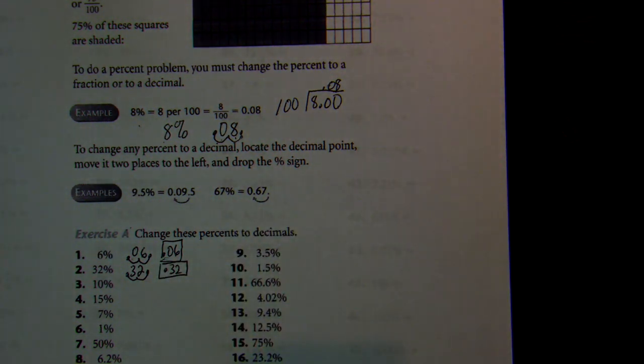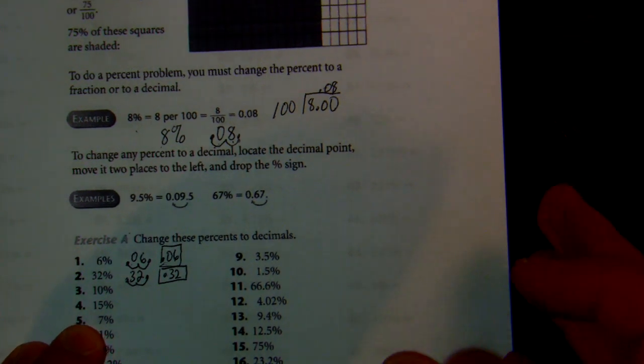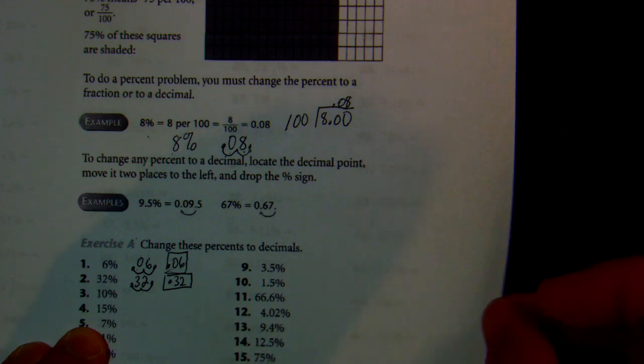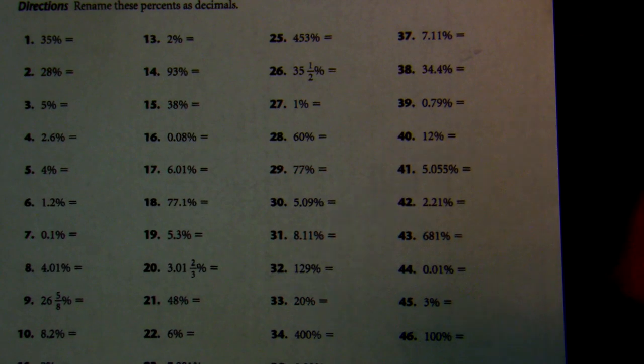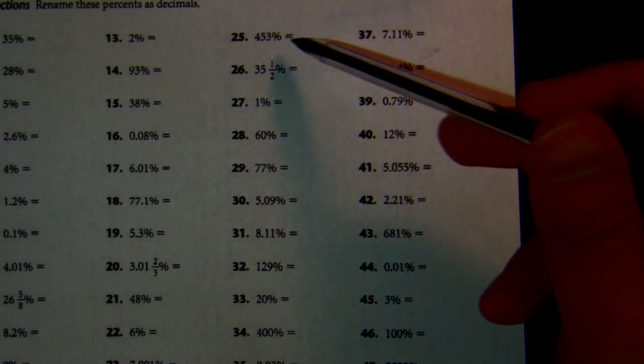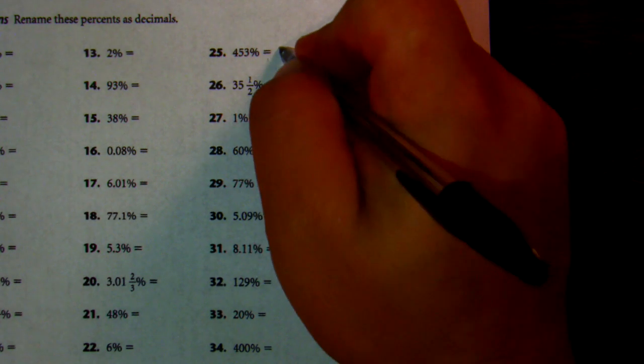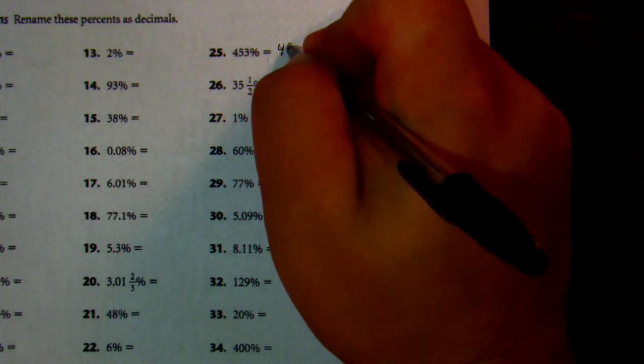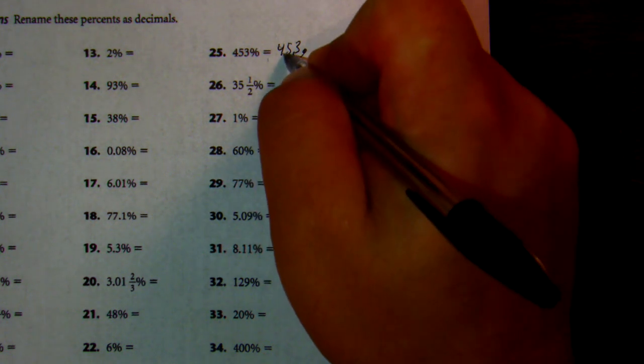We start getting to examples that are in the hundreds, which I believe would be on the next page of our assignment. So let's go ahead and move that over and then let's look for one that is greater than 100. Here we go, number 25: 453 percent. So if I have 453, I change the percent to a decimal, move that to the left twice, so I'm at 4.53. So that is my answer there.